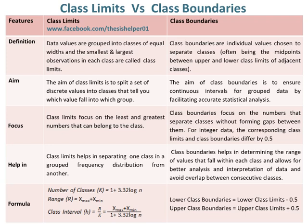For finding the number of classes, range and class interval formulas are given for comparison. Lower class boundaries are calculated by subtracting 0.5 from lower class limits, and upper class boundaries are calculated by adding 0.5 to upper class limits.